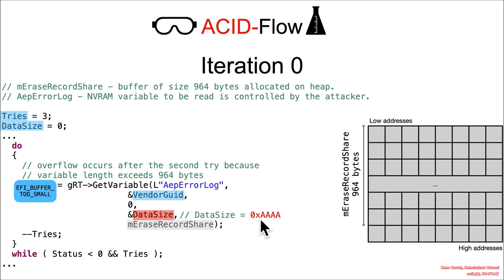But because it's reading from an attacker-controlled variable, that can be whatever the attacker wants, so they can set the data size to whatever they want. Tries is decremented to two. EFI_BUFFER_TOO_SMALL is less than zero, so it continues. That's just an error message, and we're off to iteration one.